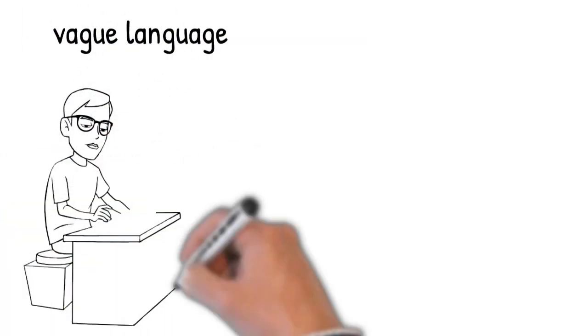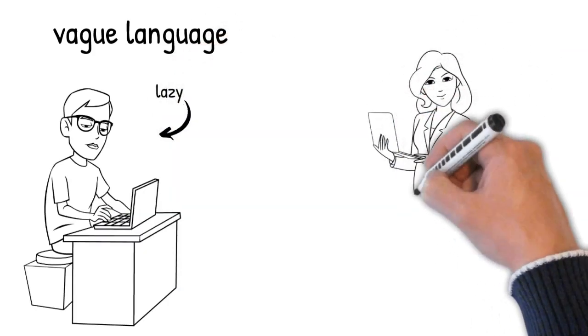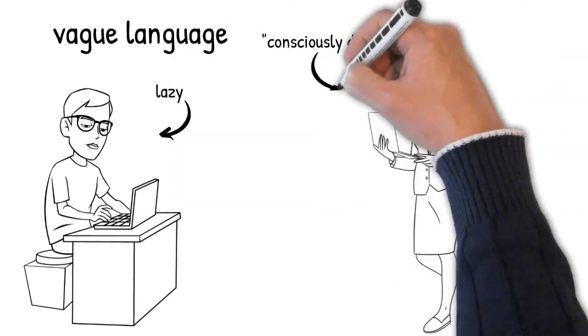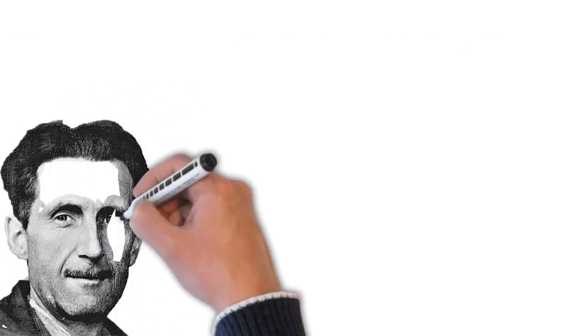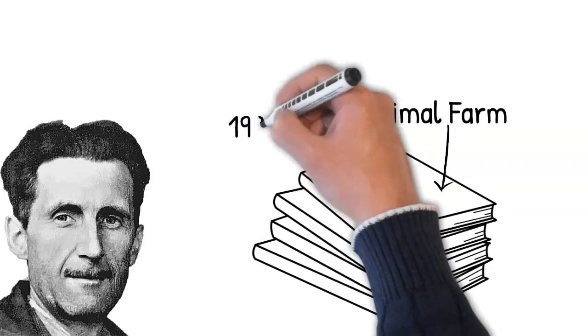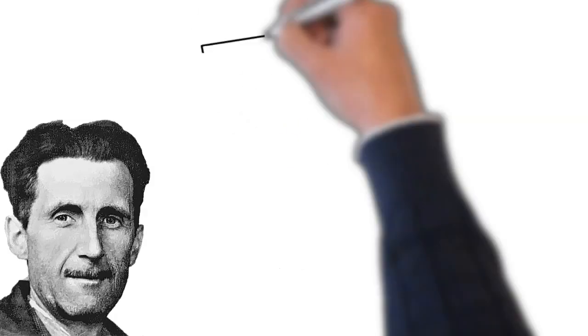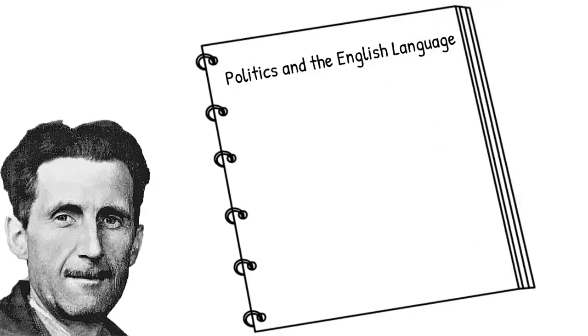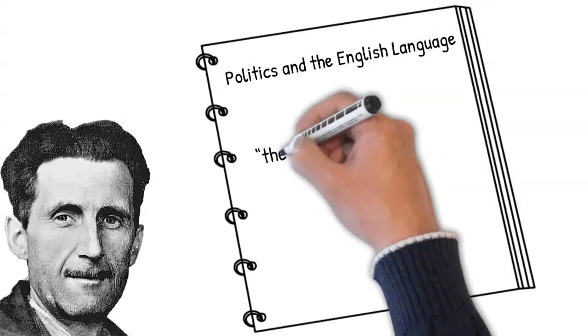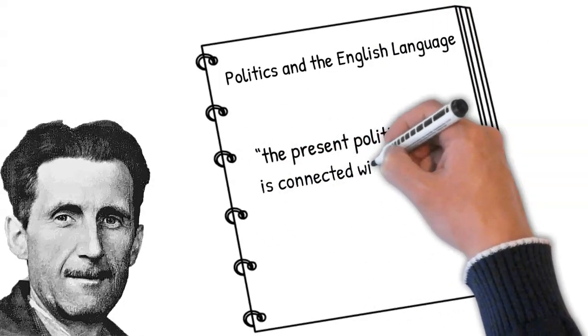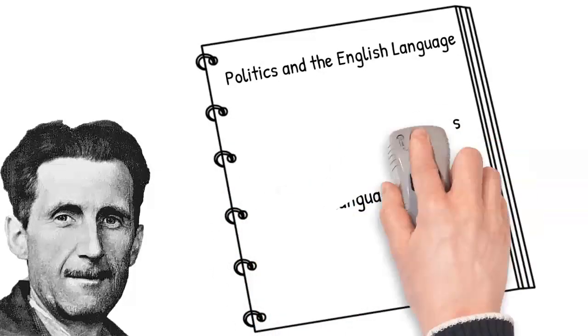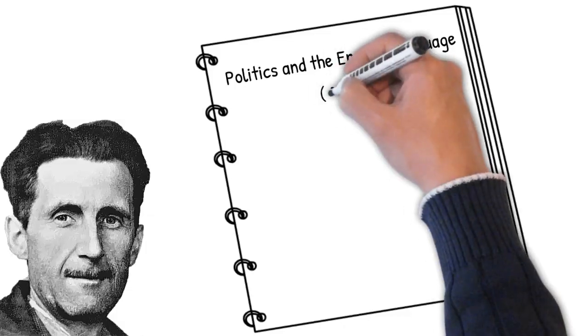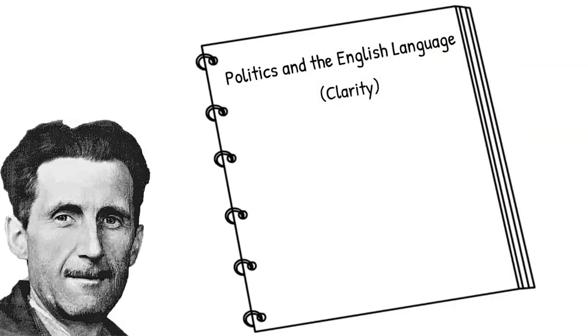Now, vague language can be unintentional, the result of lazy writing, but it can also be, as George Orwell puts it, consciously dishonest. You've probably heard of Orwell. He's best known for writing his books Animal Farm and 1984. He also wrote a famous essay entitled Politics and the English Language. In it, he argues that the present political chaos is connected with the decay of language, and this was back in 1946.